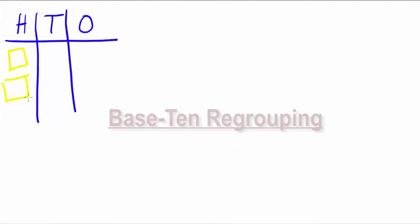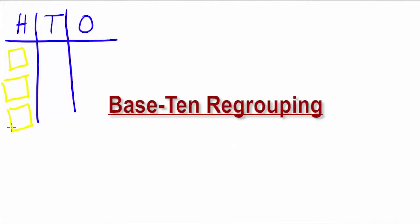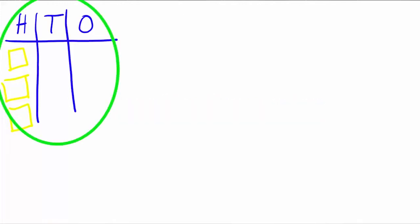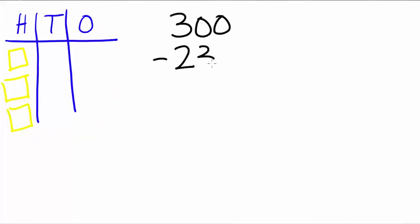I'm going to begin with placing my 300 on the place value mat. Each flat represents 100, and I'll record that 300 here on my recording sheet. I'm going to write out my equation 300 minus 234 vertically. If I look back at my place value mat and base 10 blocks, I don't have anything in the tens or ones, so I'll need to do some regrouping.